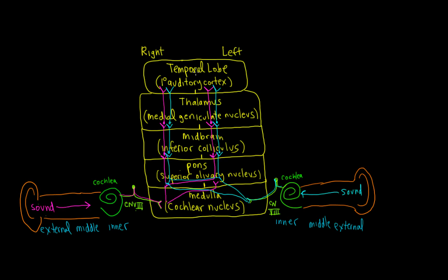This is really important because this is going to help us localize focal lesions causing unilateral hearing loss. If you understand this pathway and it's bilateral after the cochlear nucleus, that's going to be extremely helpful for that kind of localization.